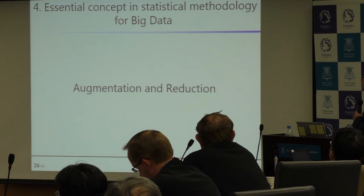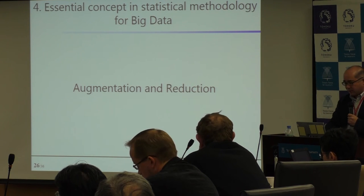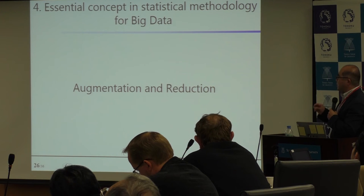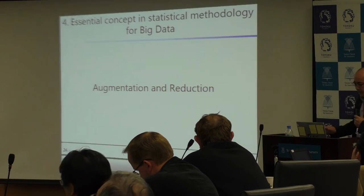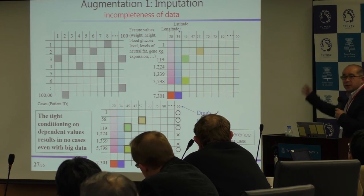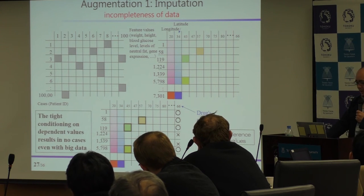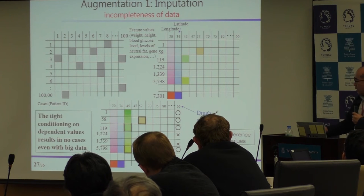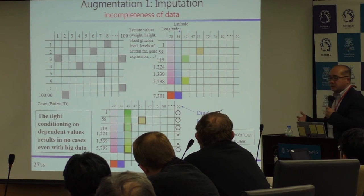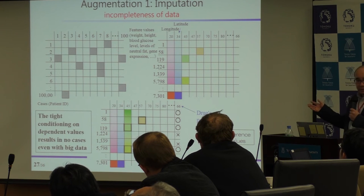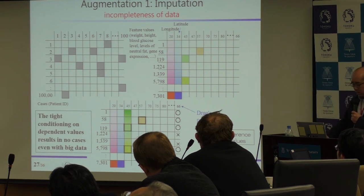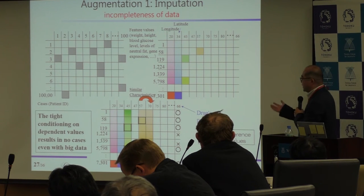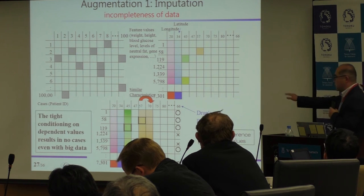I would like to make a point on the essential concepts in statistical methodology for Big Data. We introduced two methods for augmentation and three important techniques for reduction. The first technique is imputation. There are many Bayesian statisticians here, so the importance of imputation is easily accepted. Original data has many missing values. Some reasonable way of putting informative information is very important to fill out a very sparse table. A very aggressive input of information can successfully fill out this kind of sparse imputation.